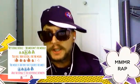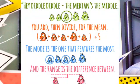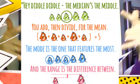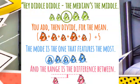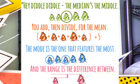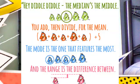One more time now! Hey diddle diddle, the median is the middle. Add and divide to get the mean. The mode is the one you see the most, and the range is the difference between. The mode is the one you see the most, and the range is the difference between. All right now!